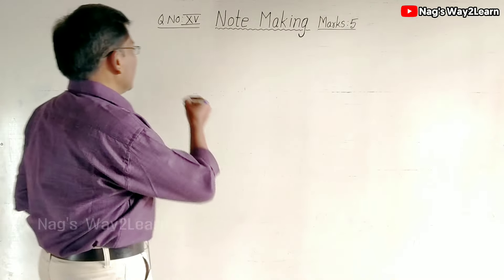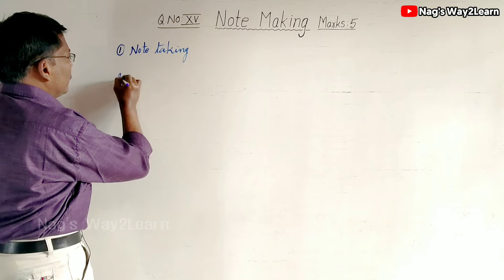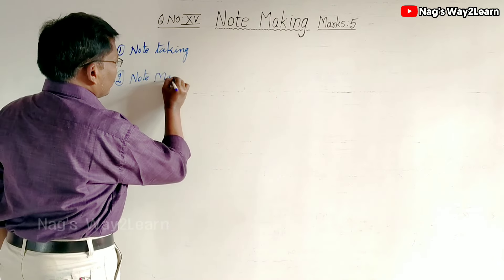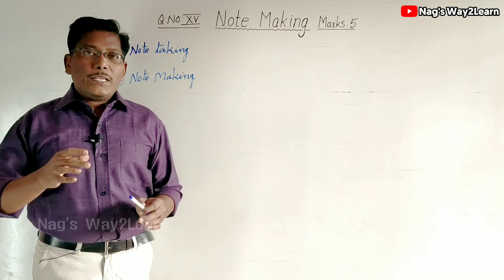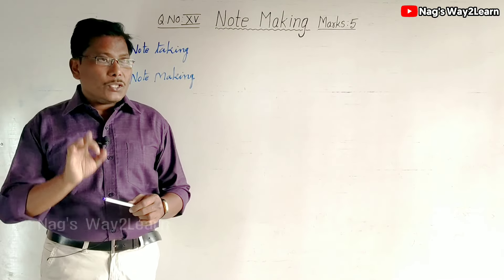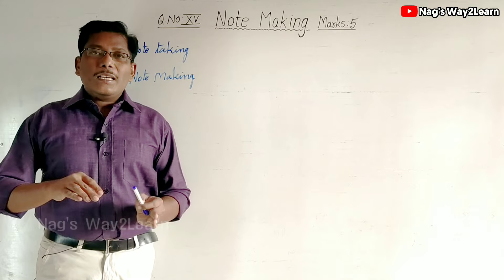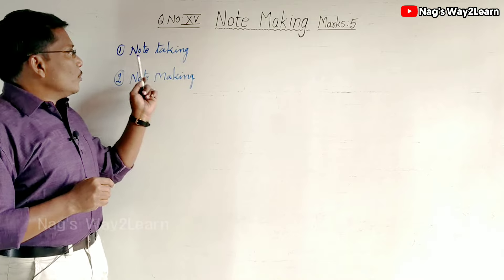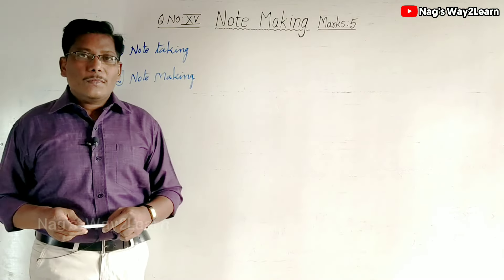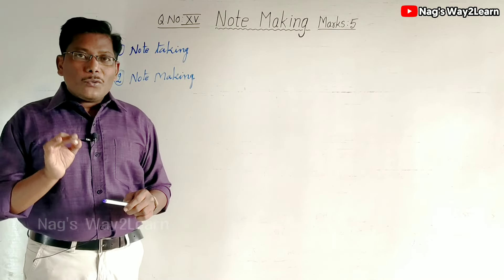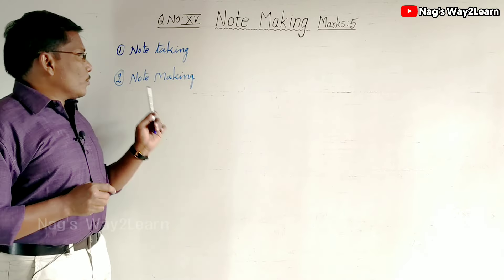There are two kinds of study skills: note taking and note making. If you write important points from an oral speech by listening to it, that is called note taking. For example, if you attend a meeting and write notes while listening to the speaker, that is note taking. But if you write notes by reading some printed text, that is called note making.